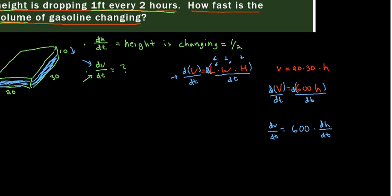And thankfully, we know dh/dt. It is how the height is changing. It is half a foot every hour. So this is going to be 600 times 1/2, which equals 300. And then we need some units.